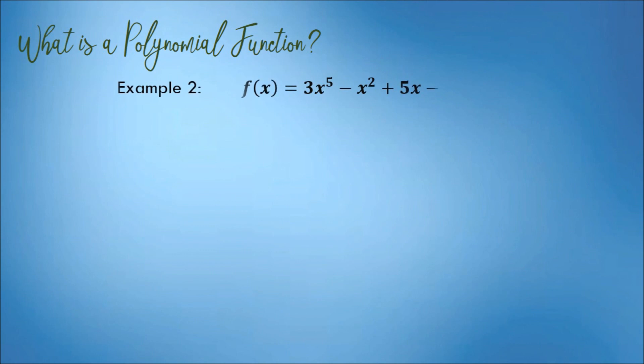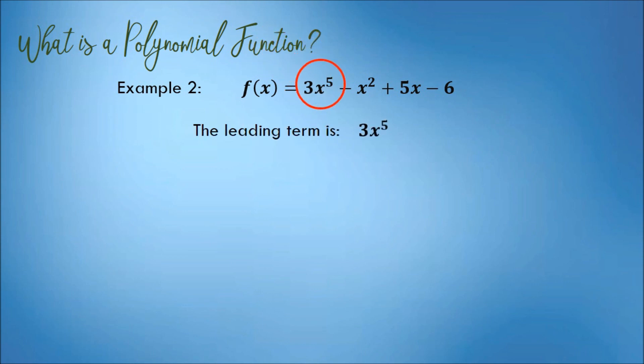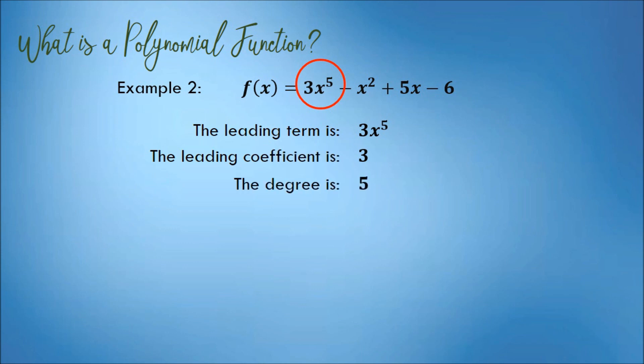Another example, we have this function: f(x) = 3x raised to 5, minus x raised to 2, plus 5x, minus 6. This is a polynomial function because all exponents are positive integers. The leading term is 3x raised to 5, because it has the highest exponent. The leading coefficient is 3. The degree of this polynomial function is 5.